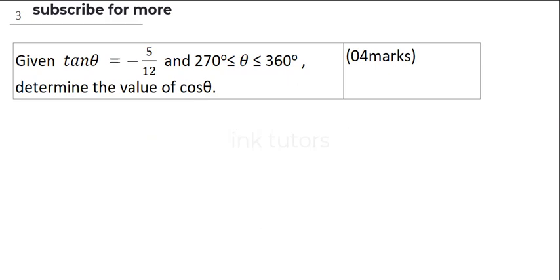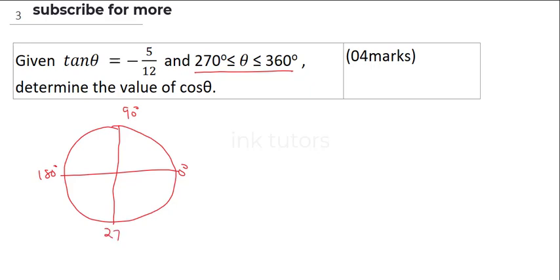Question 3 says, given tan theta is equal to minus 5 over 12, and 270 degrees less than theta, which is less than 360 degrees, determine the value of cos theta. The first thing you need to notice in this question is, we've entered our theta falls in between this quadrant part of the circle, so we are going to draw our circle. I'm going to split my circle, this is 0 degree, this is 90, this is 180, this is 270, and back to 360 degrees.